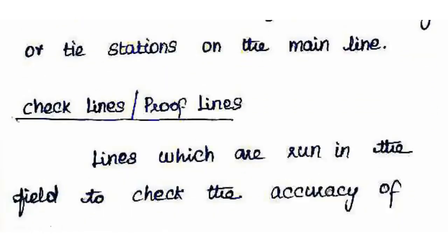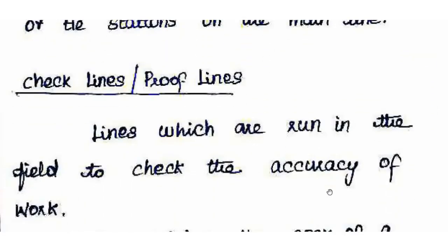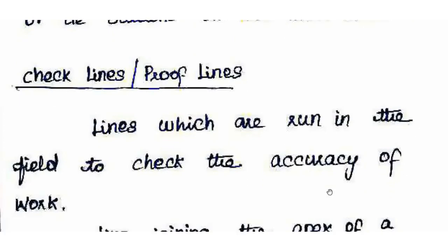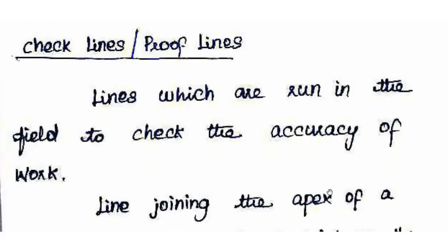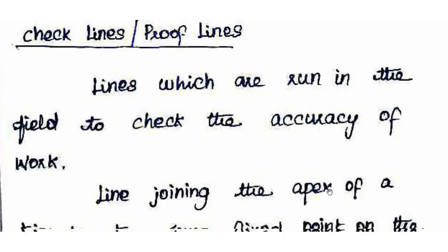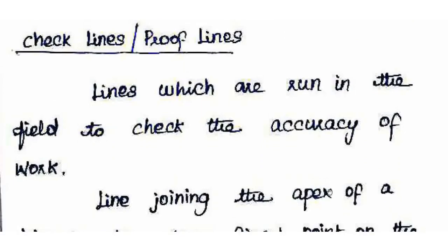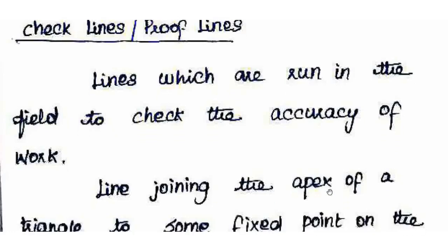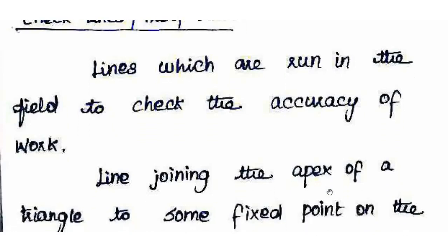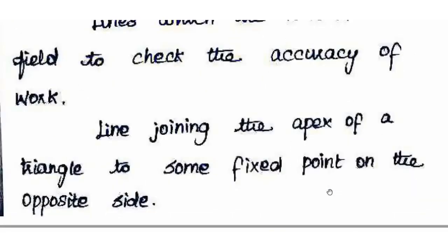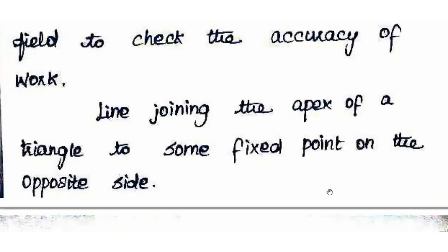Check line or proof line is used for checking accuracy. The check line is the line joining the apex of a triangle to some fixed point on the opposite side.